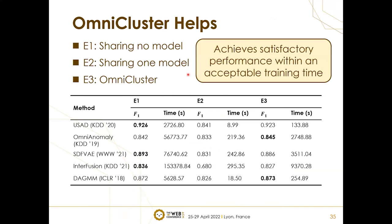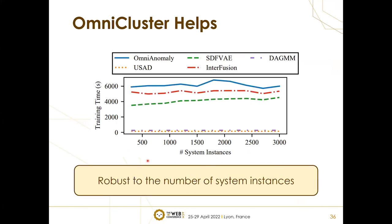To prove Omni-cluster is universal to anomaly detection algorithms, we select five detection algorithms to test their performance. From the experimental results, we can draw the following conclusions. Combining with Omni-cluster, the training time of anomaly detection models is greatly reduced while still achieving satisfying performance. No matter which anomaly detection algorithm is used together with Omni-cluster, the effects of Omni-cluster are consistent. Besides, the training time will not significantly increase when the number of system instances in the dataset becomes larger.